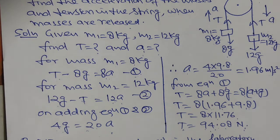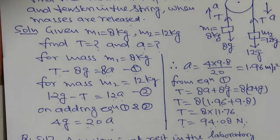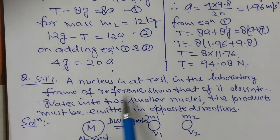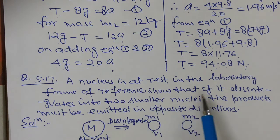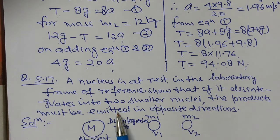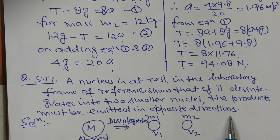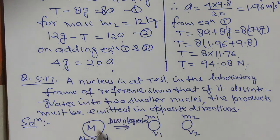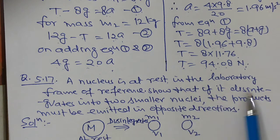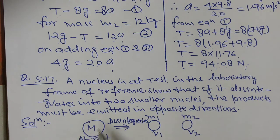Question number 5.17: A nucleus is at rest in the laboratory frame of reference. Show that if it disintegrates into two smaller nuclei, the products must be emitted in opposite directions. We are given a heavy nucleus at rest in the laboratory frame. The question asks us to prove that when it disintegrates — meaning splits — the two parts move in opposite directions.